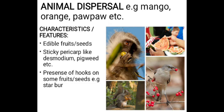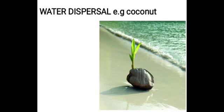They also have the presence of hooks on some fruits or seeds, like in star ball, which allows the fruit to be attached to an animal's body so that it can be moved around as the animal moves from one place to another. Let's move on to water dispersal.